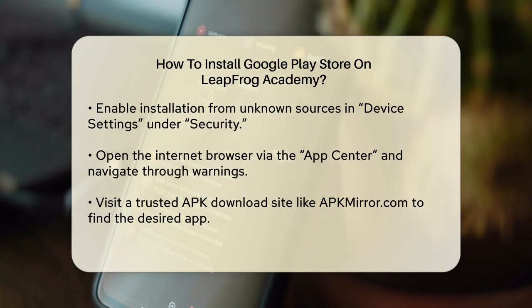Next, you need to allow the device to install apps from unknown sources. Go to Device Settings and then select Security. Tap the box next to Unknown Sources and acknowledge the warning.